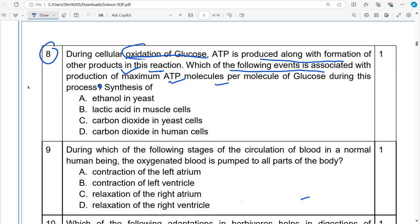So, the oxidation of glucose is during cellular respiration. ATP is produced in the respiration process. In this reaction, maximum energy will be produced in aerobic respiration.